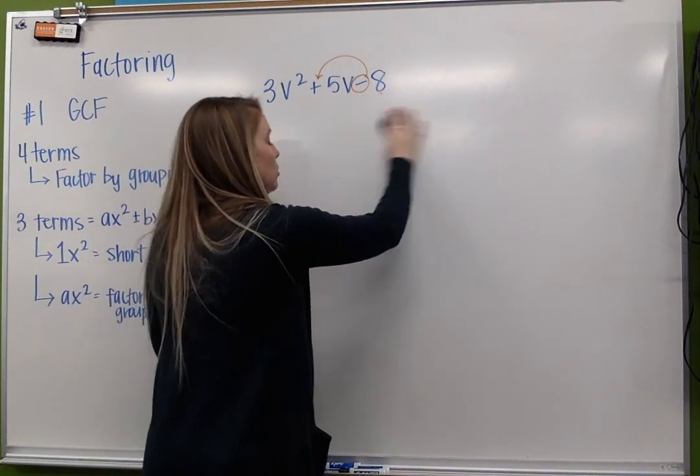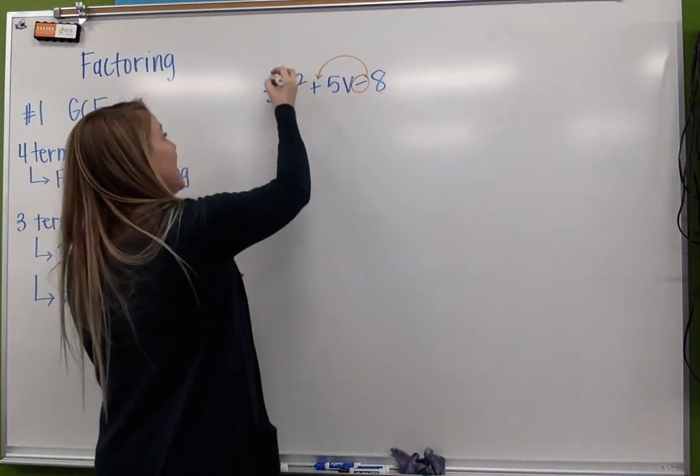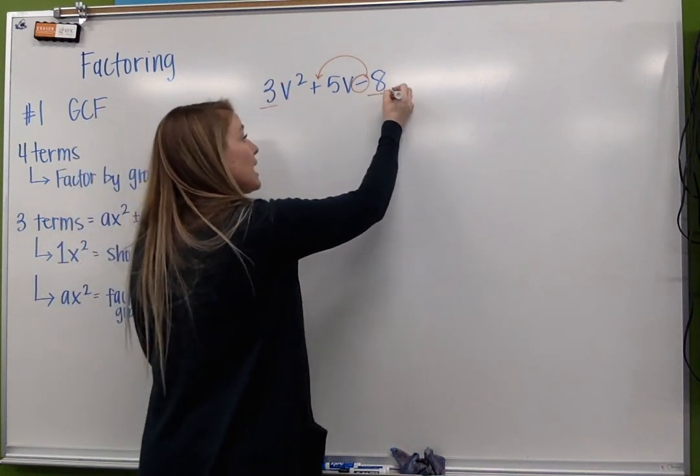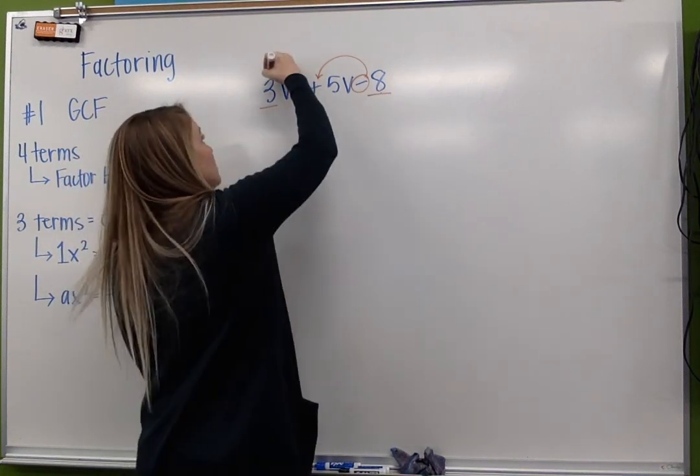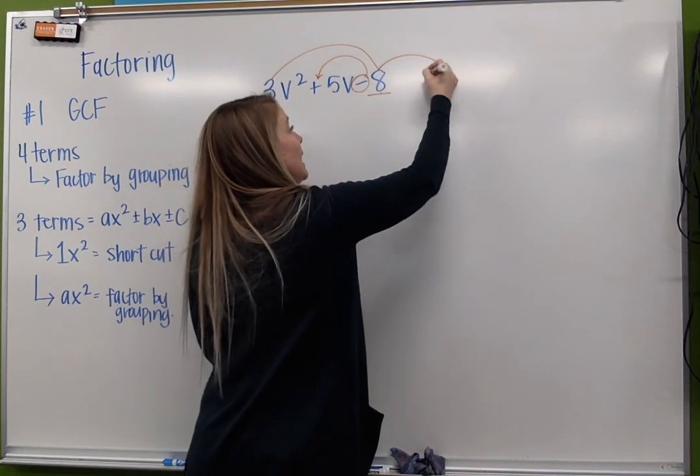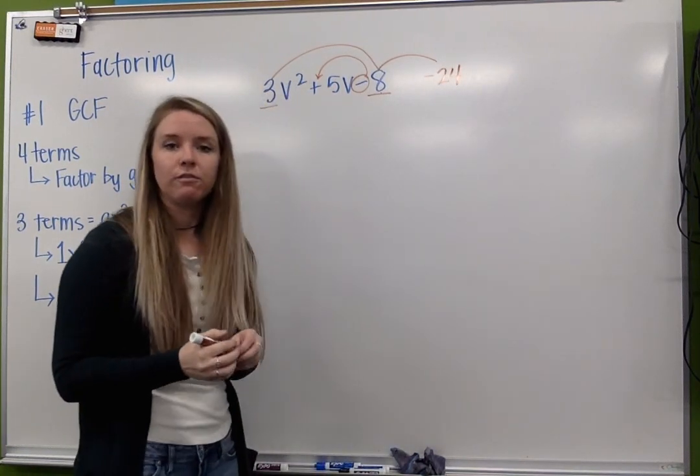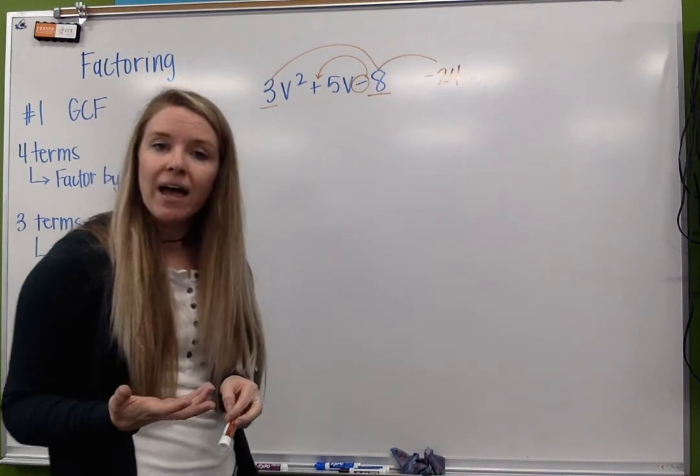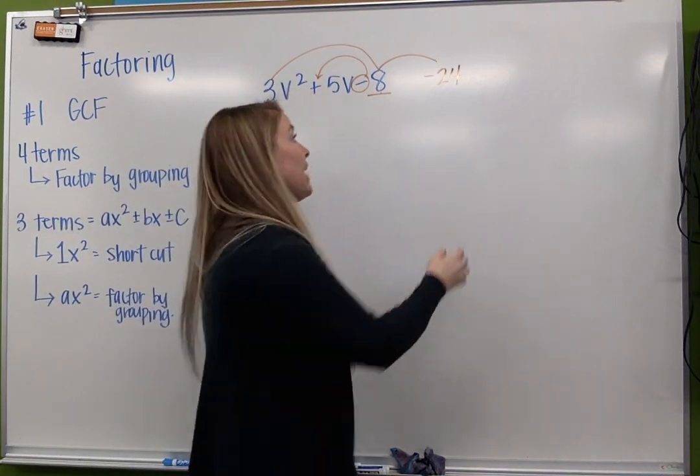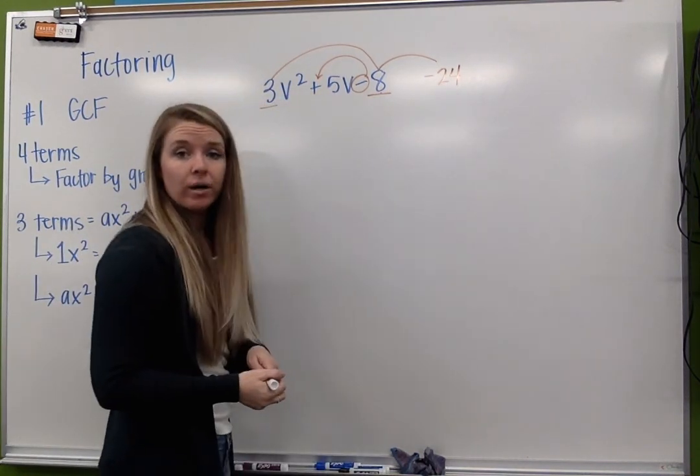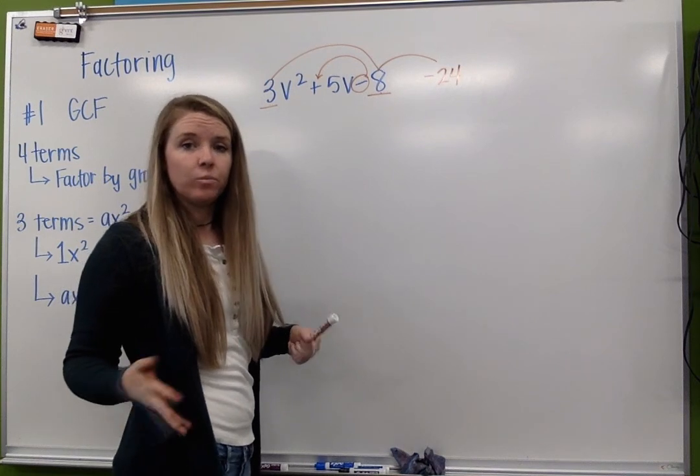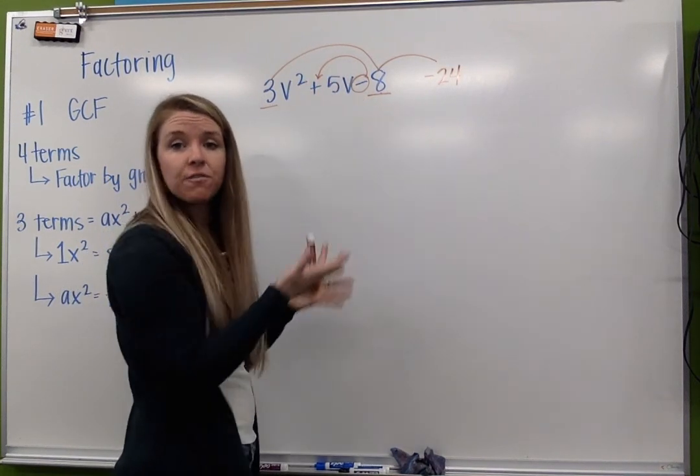what we're going to do is I'm going to take 3, and I'm going to multiply it to 8. 3 times 8, negative 8, gives me negative 24. So instead of factoring 8, we're going to factor negative 24. That's the only difference. We're using this number as a reference to find our factors.